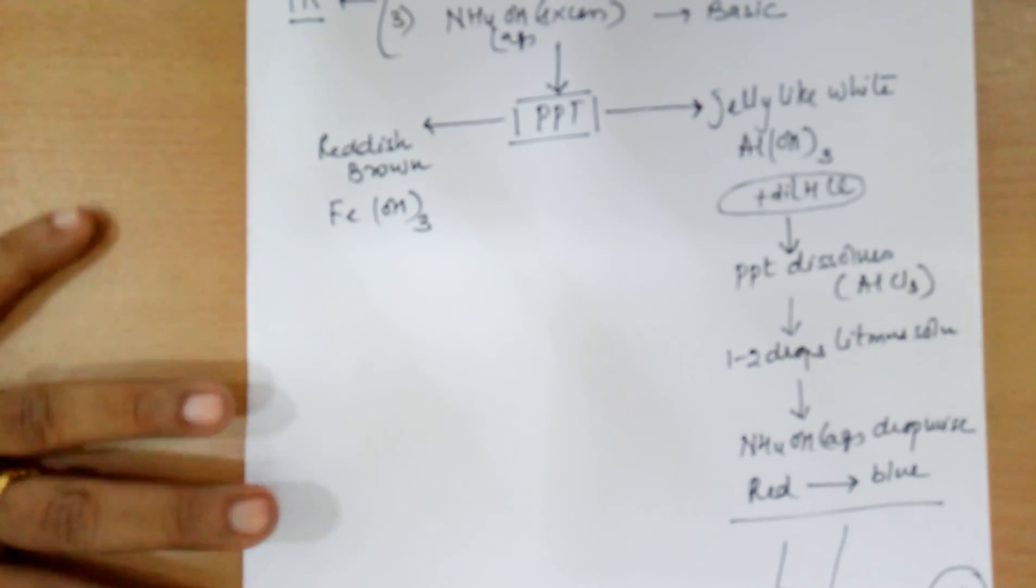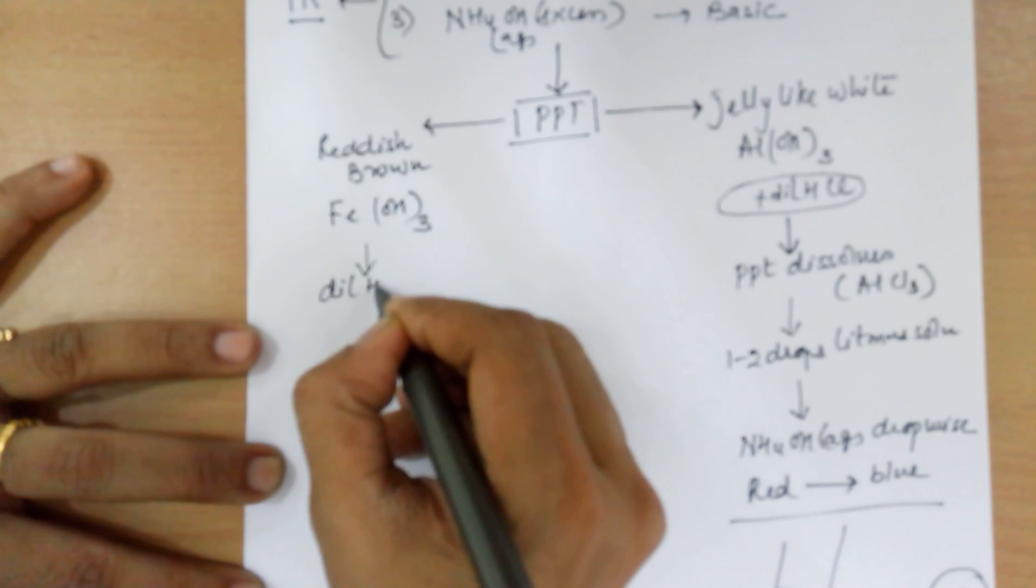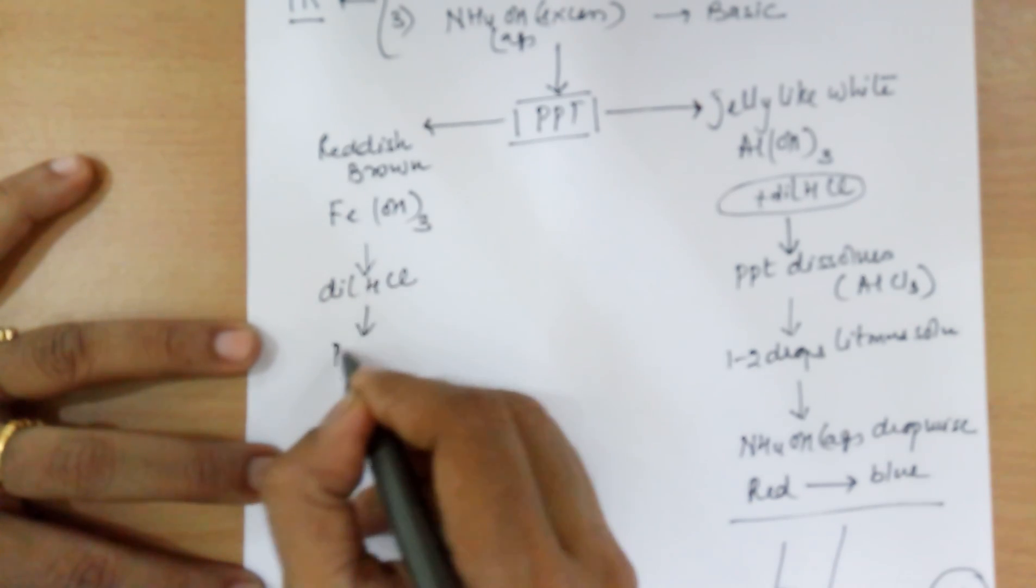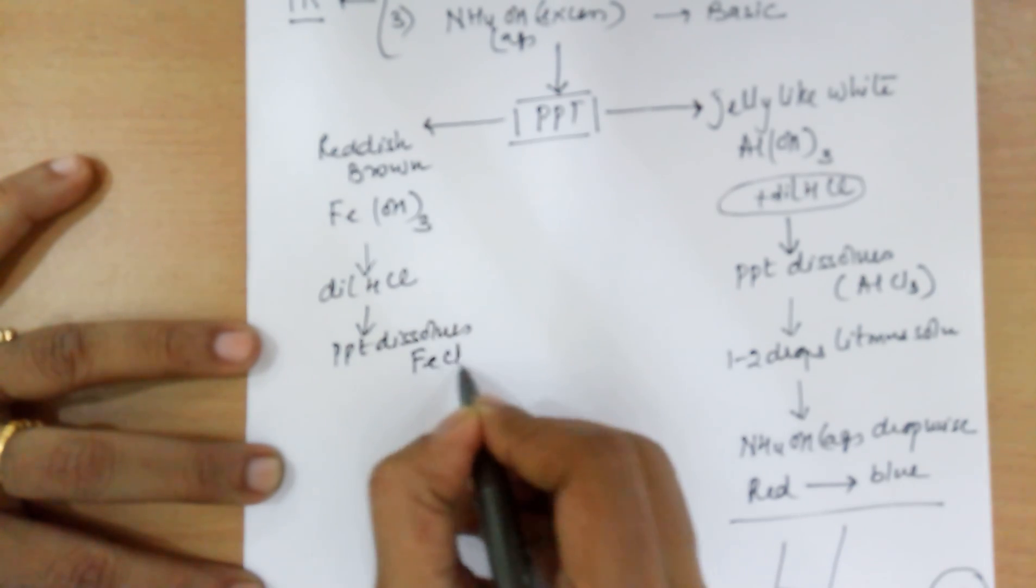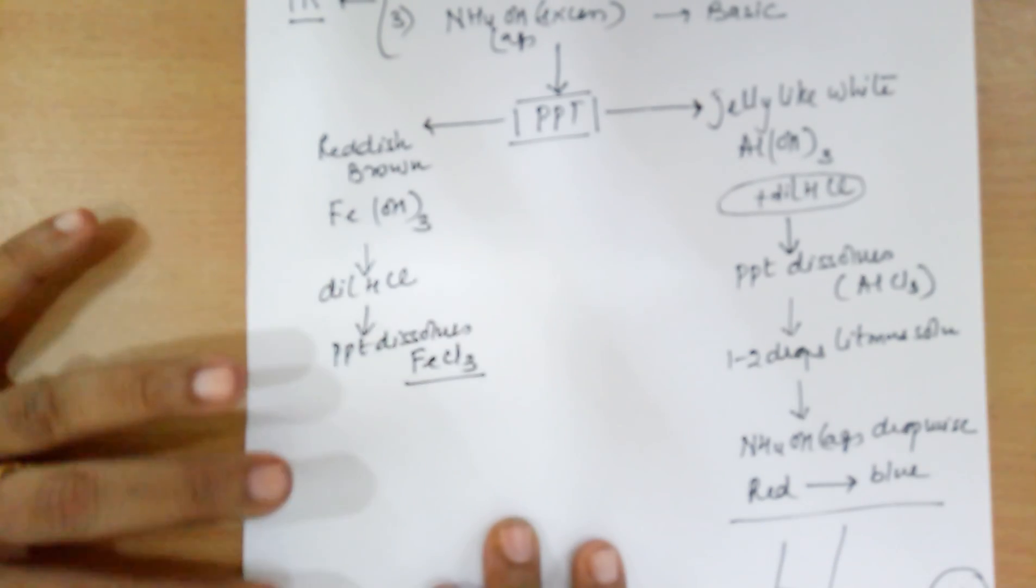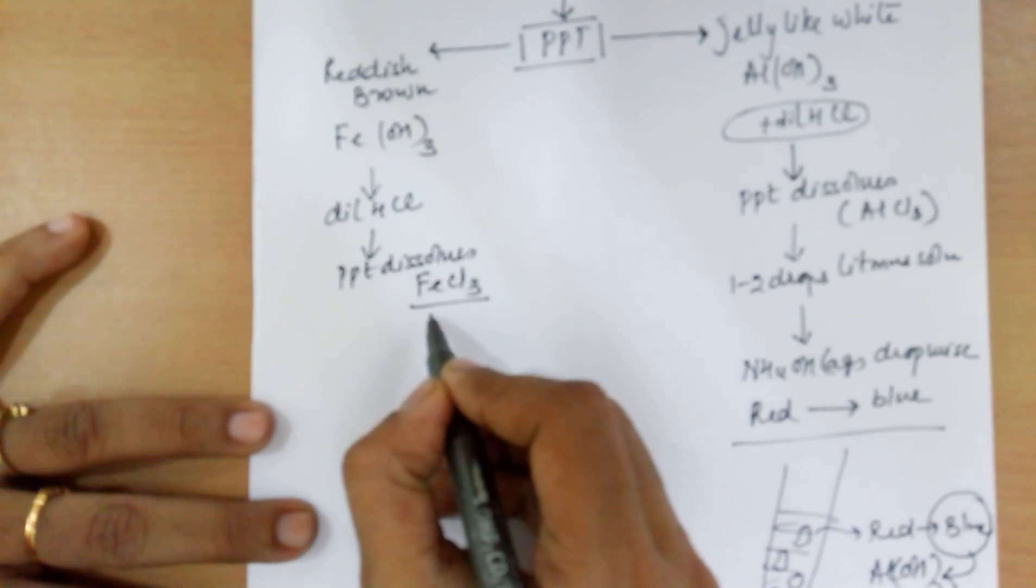Now for the iron, the reddish brown PPT that you get, you add dilute HCl to it. The PPT again dissolves. Of course, that is understandable. It leads to the formation of the ferric chloride aqueous solution. After the PPT dissolves, divide it into two parts.